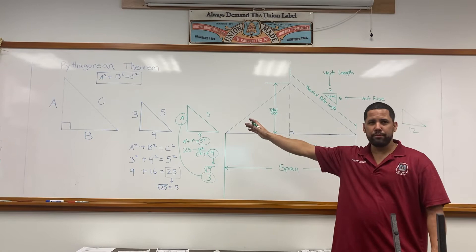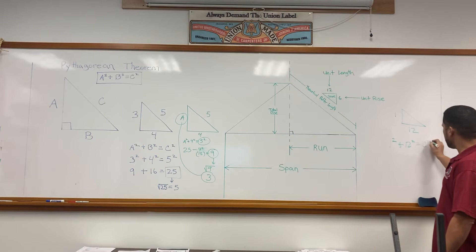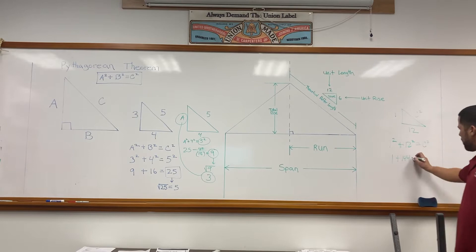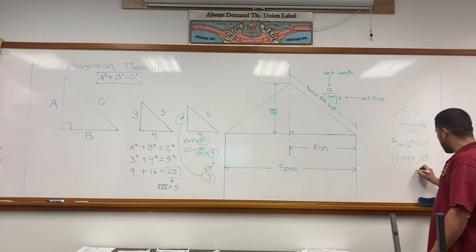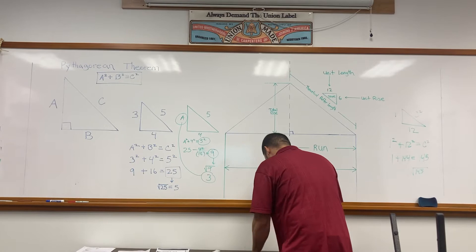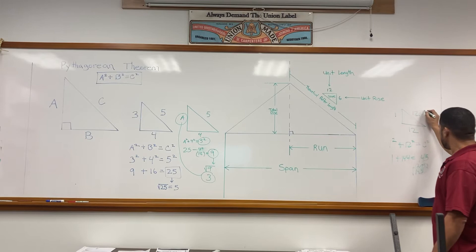For example, number one, using the Pythagorean theorem: 1² + 12² = c². C² is what we're looking for. So 1² is 1, plus 144, which is 12 times 12, equals 145. If you find the square root of 145, you will have 12.04. So c is 12.04.